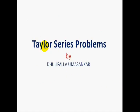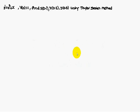Today, we are going to discuss Taylor series problems. Given: y dash equals y squared plus x, and y(0) is equal to 1. Find y(0.1), y(0.2), and y(0.3) using the Taylor series method.